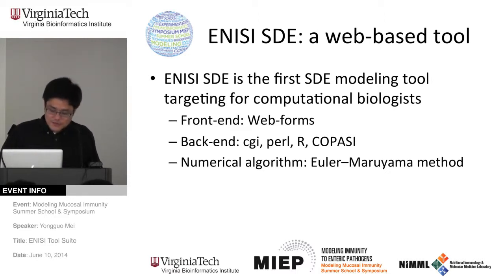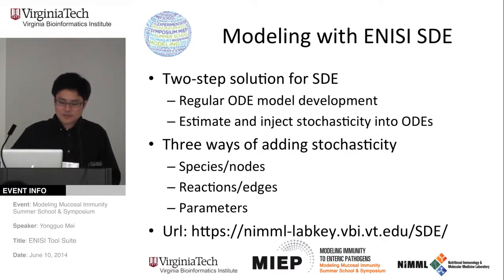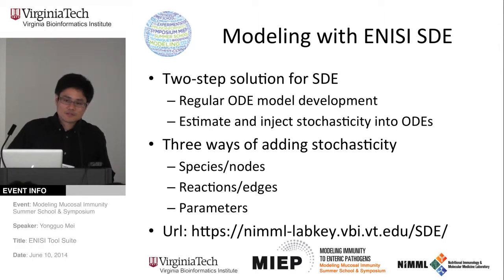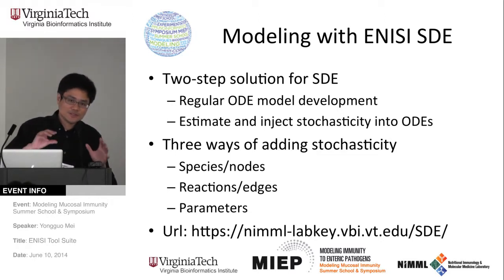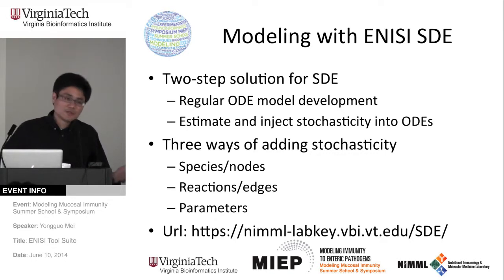The numerical algorithm used here is a very classic solution for the SDE — the Euler-Maruyama method. Essentially, it's a two-step solution. The first step: let's view the average case first, calibrate the model using ODE, calibrate the average behavior. Then, identify which critical species show a lot of stochasticity. Our tool will provide ways for you to add that stochasticity. Right now in the initial stage, it's separated into two steps. Ideally, we can integrate them together — that may be one of the future works.